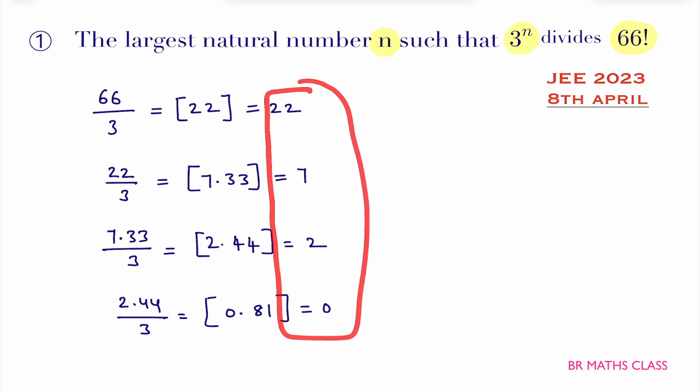Now you add all this: 22 plus 7 plus 2. So when you expand this 66 factorial, 3 is a prime number, you will get 3^31.